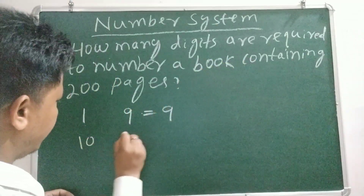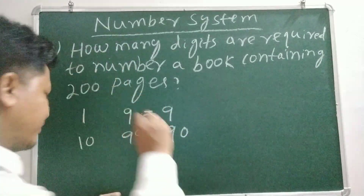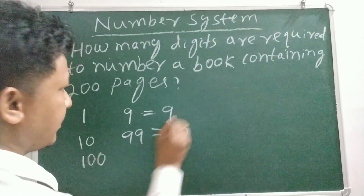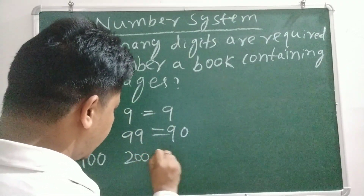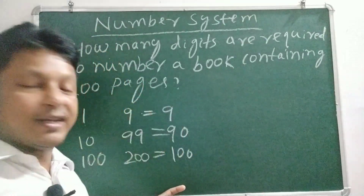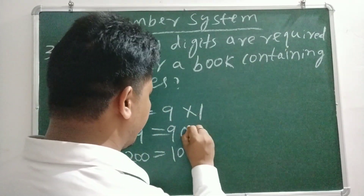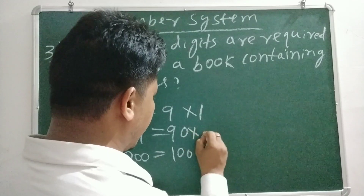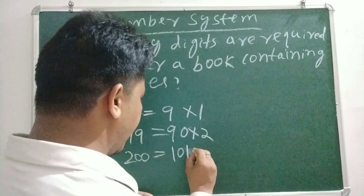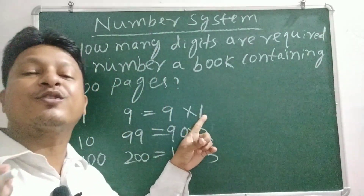Pages 10 to 99 use 2 digits each, giving 90 pairs, so 180 digits. Pages 100 to 200 give 101 pages with 3 digits each, totaling 303 digits.